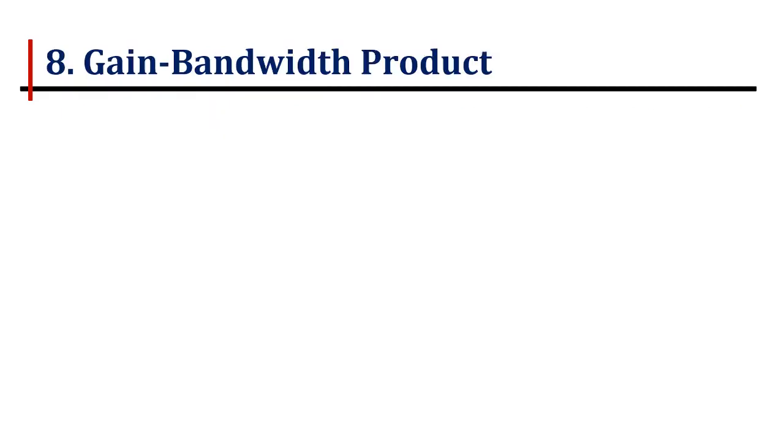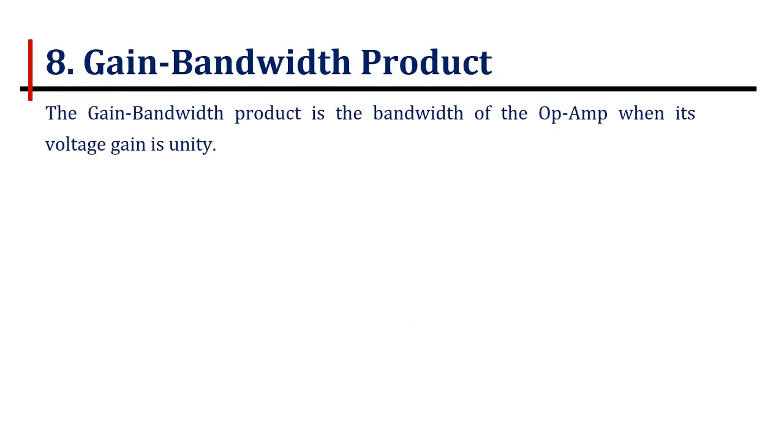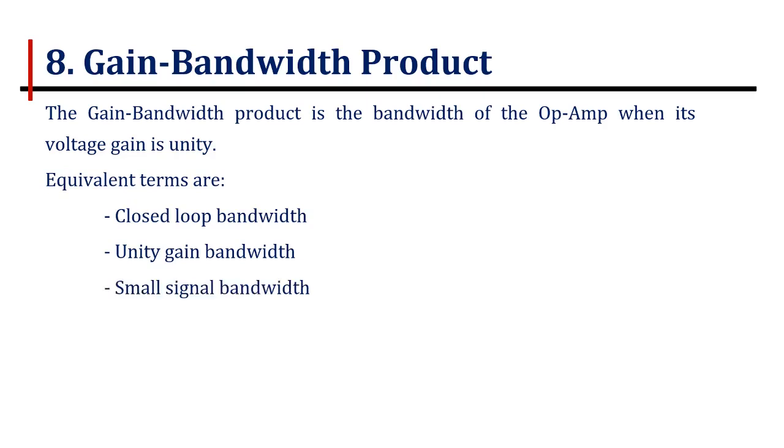Last parameter is the gain bandwidth product. The gain bandwidth product is the bandwidth of the operational amplifier when its voltage gain is unity. The gain bandwidth product is referred by many authors as closed loop bandwidth, unity gain bandwidth, and small signal bandwidth.